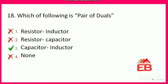Next: which of the following is a pair of duals? Options are resistor-inductor, resistor-capacitor, capacitor-inductor, or none. The correct option is option 3 — capacitor and inductor are a pair of duals. When subjected to a supply, there is an exchange of energies between these two elements.